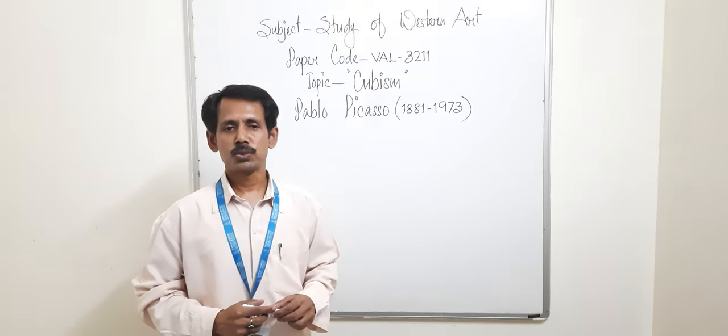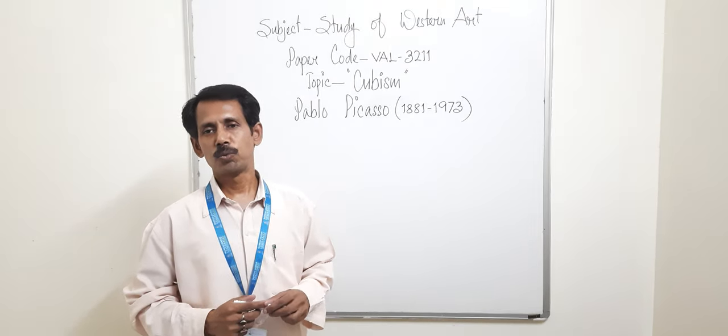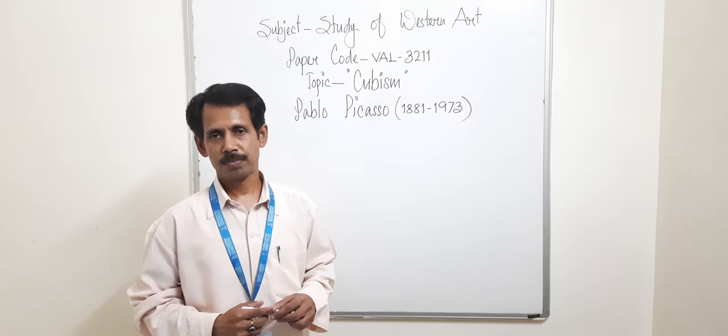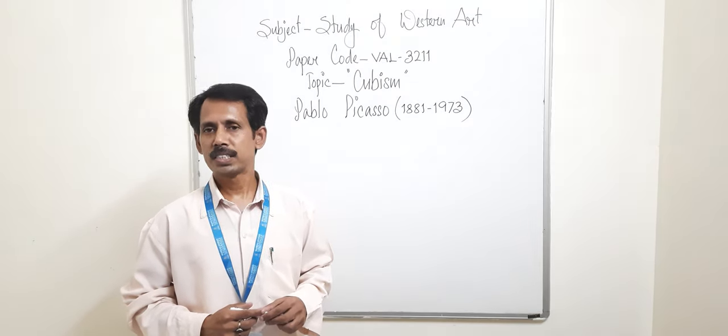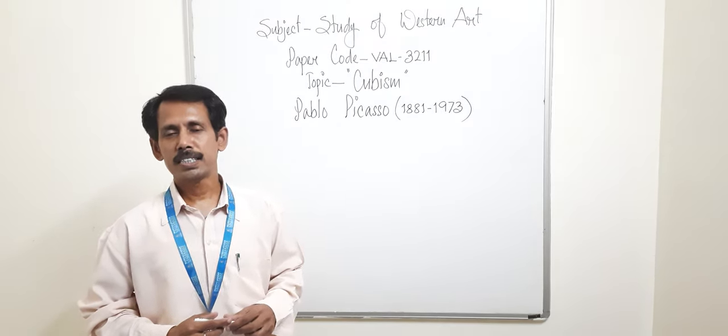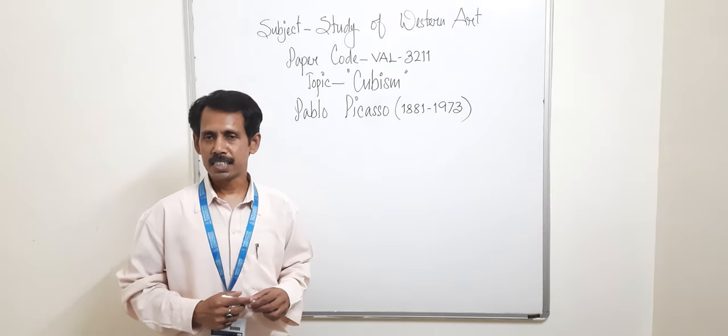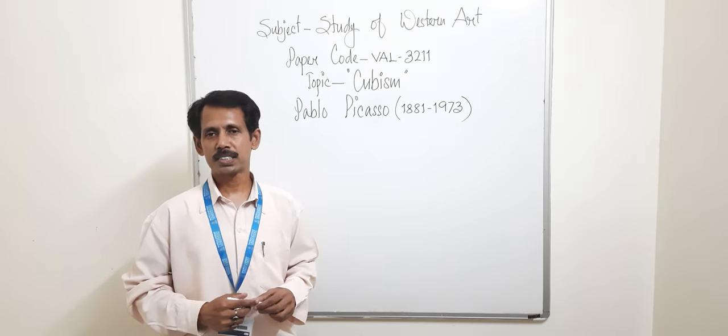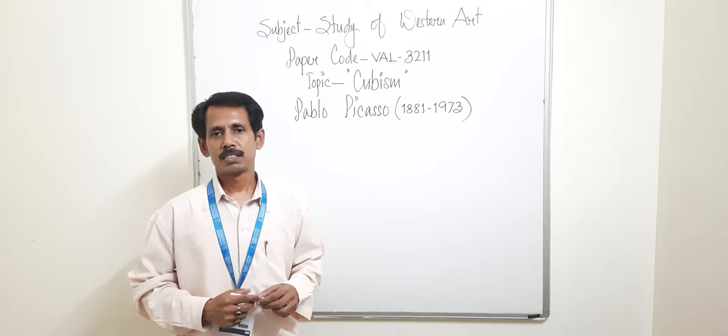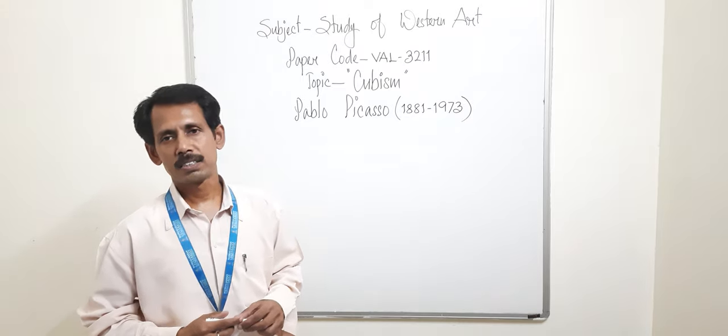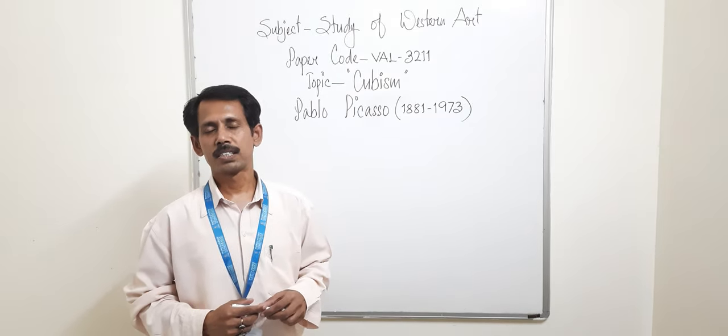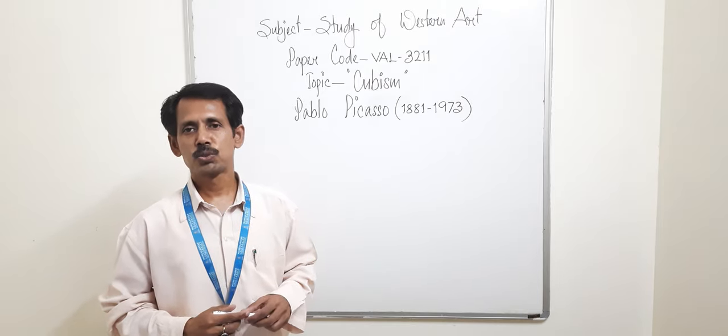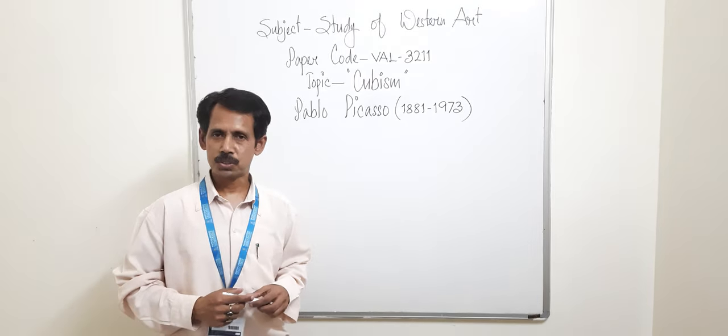Now we need to know that all these Isms were art movements. It started in 20th century and in many forms, in many styles, in many ways artists wanted to show their creativity, wanted to show their ideas and thoughts and philosophy through their paintings and sculptures.